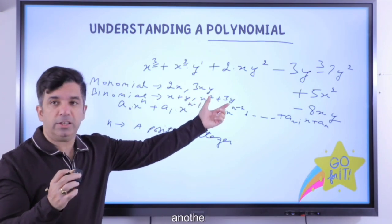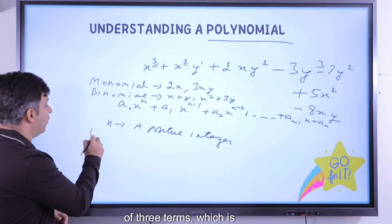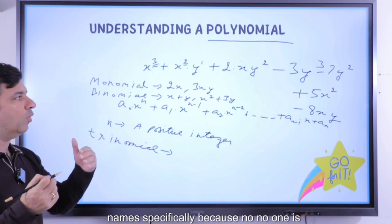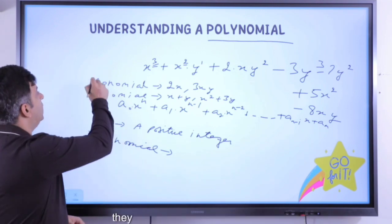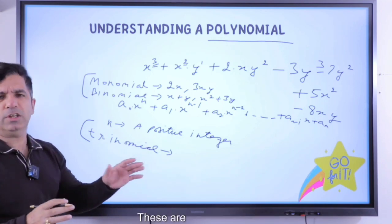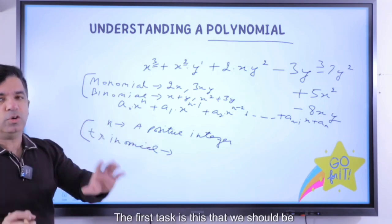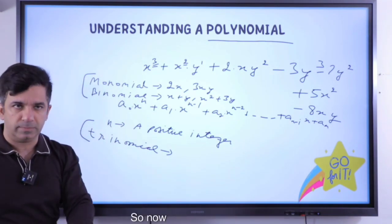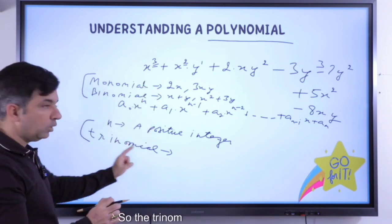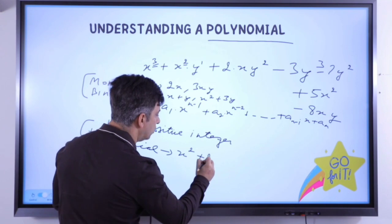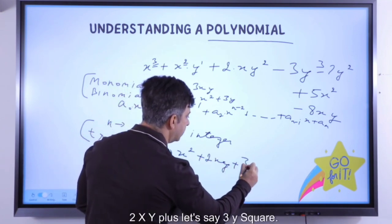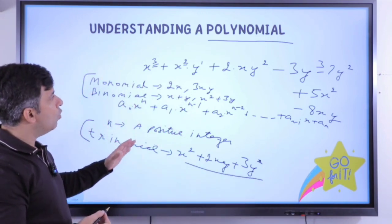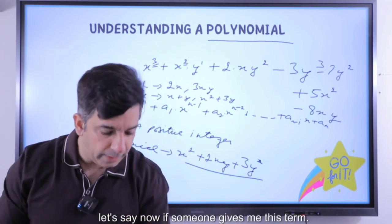Similarly, one term adding with another term. There is also a name for three terms: trinomial. You don't need to specifically memorize these names since no one will directly ask for them, but they come up in questions so you should know them. For example, x² + 2xy + 3y² is a trinomial expression because it involves three terms.